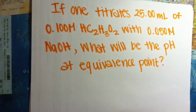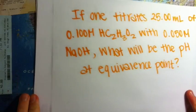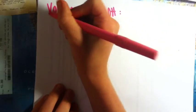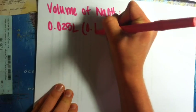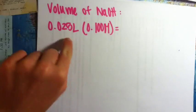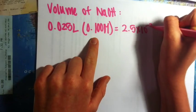If one titrates 25 milliliters of 0.1 molar acetic acid with 0.05 molar sodium hydroxide, what will be the pH at equivalence point? First, we must find the volume of sodium hydroxide needed to reach equivalence point. We need to find the moles of acetic acid, which would be the volume multiplied by concentration, which is 2.5 times 10 to the negative third moles.